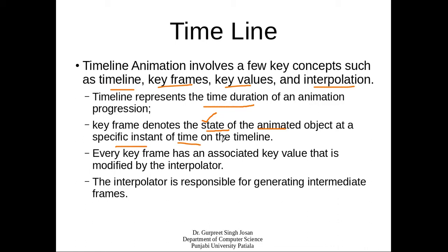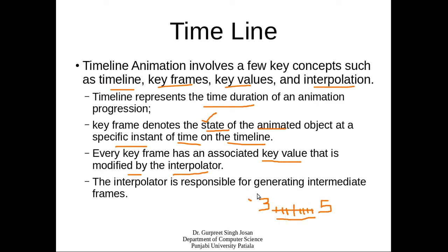Every key frame has an associated key value that is modified by the interpolator. The interpolator is a mathematical function used to find intermediate values. For example, if I have value 3 at one end and value 5 at the other end, there are many values in between such as 3.1, 3.2, 3.3, 4.0, 4.1, 4.9, 4.95, and finally 5. The interpolator finds all these in-between values mathematically.